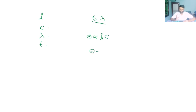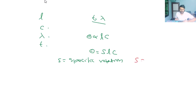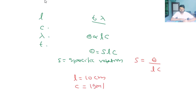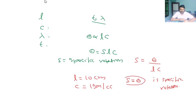We can write the equation as theta equals S times L times C, where S is a proportionality constant called specific rotation. Specific rotation S is defined as S equals theta divided by LC. If the length of the liquid column L is 10 centimeters and concentration C is one gram per cc, then S equals theta, meaning S is the specific rotation.